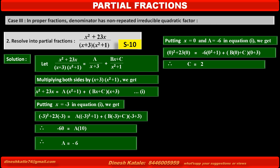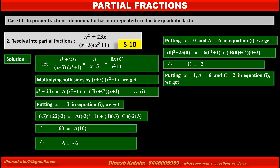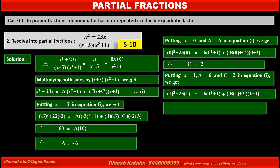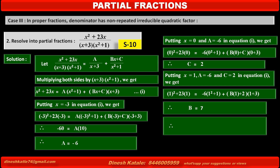To find B, we substitute a comparable value of x. Putting x = 1, A = -6, and C = 2 in equation 1: the left-hand side becomes 1² + 23×1 = 24. The right-hand side gives (-6)(1²+1) + (B×1 + 2)(1+3). Solving the above step, we get B = 7.